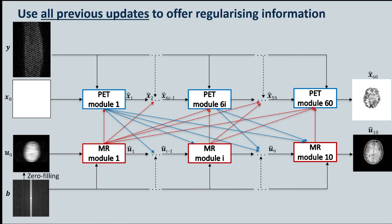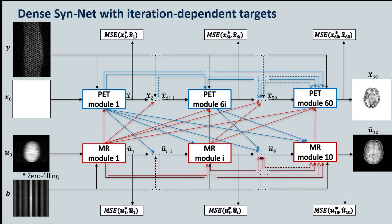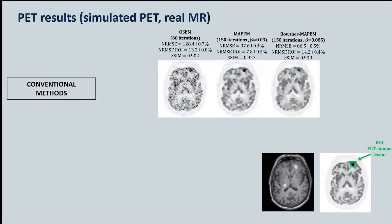Furthermore, because we can't be sure which iteration will help in the regularisation of the other modality, we allow all feasible iterations to feed into the regularisation module for the opposite modality. We also allow self-guidance of a given modality, so all previous PET iterates can inform regularisation of the later iterates, and likewise for MR. We use iteration-dependent targets and loss functions for training up this dense synergistic network.